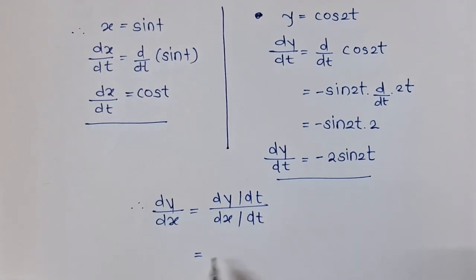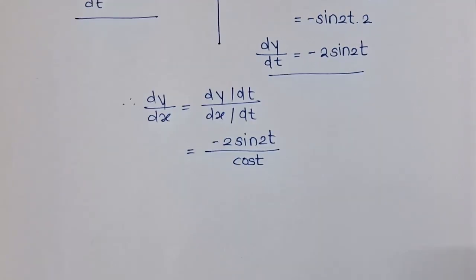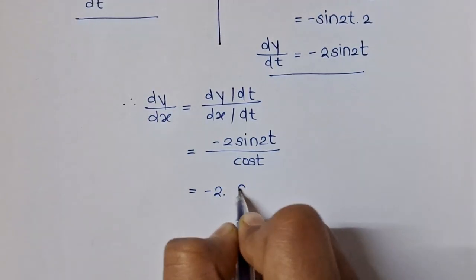Which is equal to minus 2 sin 2t divided by cos t. So we will have minus 2 sin 2t over cos t.